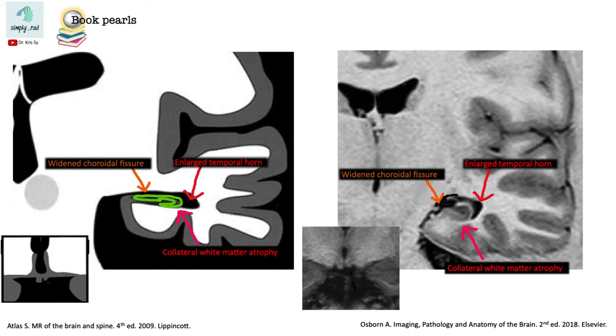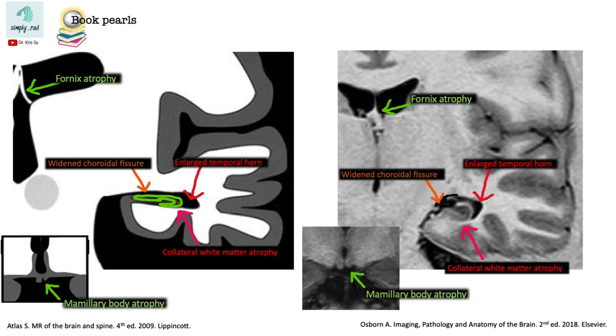In addition to seeing a small Hippocampus, we also note a small fornix and a small mammillary body on the ipsilateral side or on the same side. Why is this so?